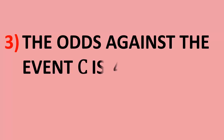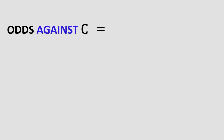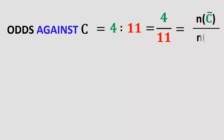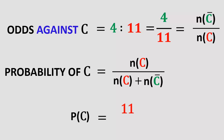The odds against the event C is 4 to 11. Find P(C). It is given that odds against C is 4 is to 11, that is 4 by 11, which equals n(C-bar) by n(C). Probability of C is n(C) by n(C) plus n(C-bar), which equals 11 by 11 plus 4, that is 11 by 15.